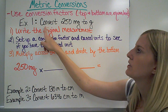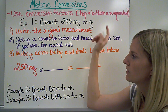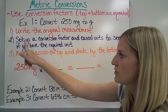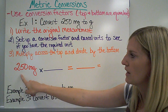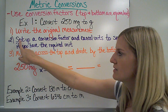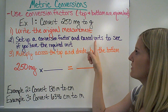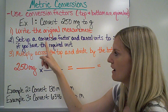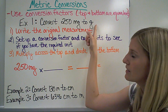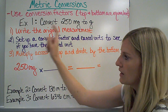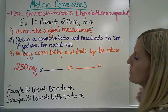For my first example, I'm going to convert 250 milligrams to grams. My first step is to write the original measurement — 250 milligrams. My second step is to set up that conversion factor. Then I'm going to cancel the units to make sure I have the required unit, which is grams, because I want my answer to be in grams. And lastly, I'm going to multiply across the top and divide by the bottom.